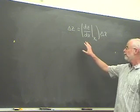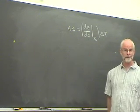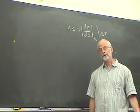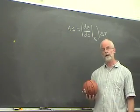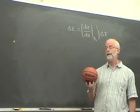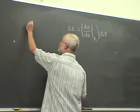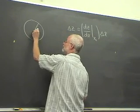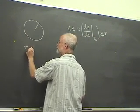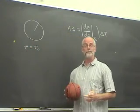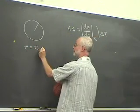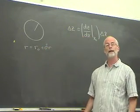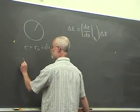Now let's see how we apply this simple calculus to the calculation of propagation of uncertainties. I want to look at another particular example to help us along. I have a sphere. Let's assume that we go into the laboratory and measure the radius of this sphere — let's say the radius is equal to r0, and we estimate the uncertainty in r0, which we'll call delta r.